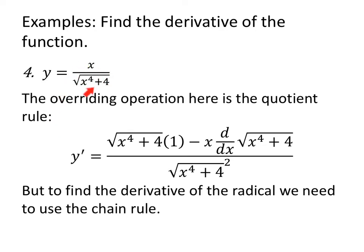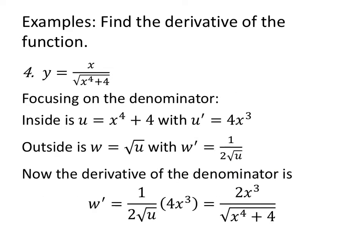Now finding the derivative, I have a quotient rule, but within the quotient rule I also have a chain rule. Using the quotient rule, y prime will have: low times d-high (derivative of x is 1) minus high times the derivative of low — and I wrote the derivative of the square root separately — all over denominator squared. I need to use the chain rule to find the derivative of the radical. Focusing on the denominator only: inside is u equals x to the fourth plus 4, with derivative 4x cubed; outside is square root of u with derivative 1 over 2 root u. So the derivative of the denominator is (1 over 2 root u) times 4x cubed, which simplifies to 2x cubed over root(x⁴ + 4).